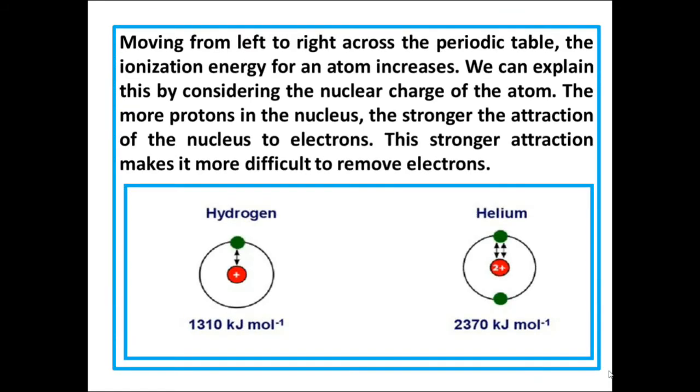Observe this diagram. Hydrogen and helium. Both are present in the first period. The ionization energy value of hydrogen is 1310 kJ per mole whereas helium 2370 kJ per mole.